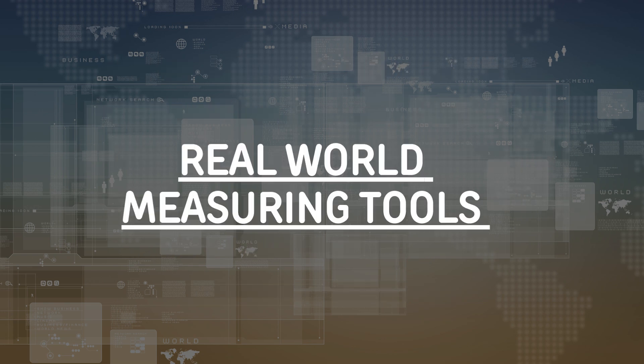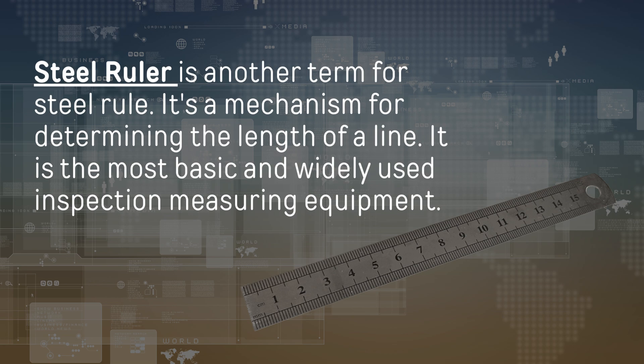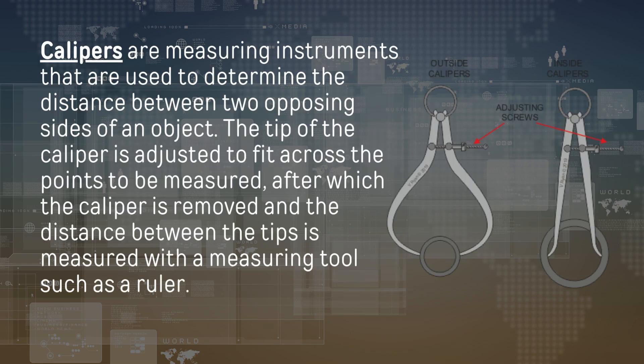A steel ruler, also known as a steel rule, is a mechanism for determining the length of a line. It is the most basic and widely used inspection measuring equipment. Calipers are measuring instruments used to determine the distance between two opposing sides of an object. The tip of the caliper is adjusted to fit across the points to be measured, after which the caliper is removed and the distance between the tips is measured with a measuring tool such as a ruler.